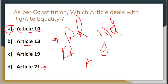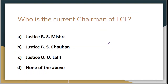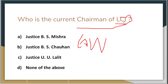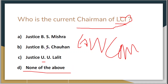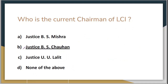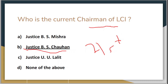Next question: who is the current chairman of the LCI — that is, the Law Commission of India? Option A is Justice B.S. Mishra, Option B is Justice B.S. Chauhan, Option C is Justice U.U. Lalit, and Option D is none of the above. The correct answer is Option B — Justice B.S. Chauhan is the current chairman of the Law Commission of India. At present we have the 21st Law Commission working.